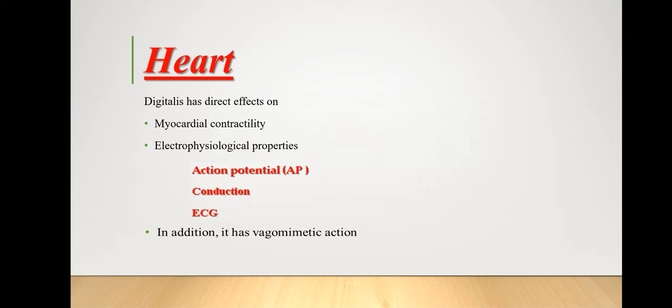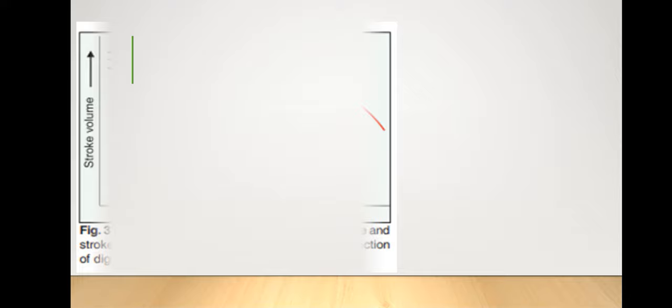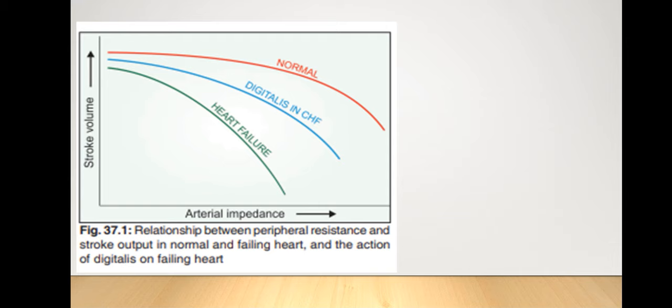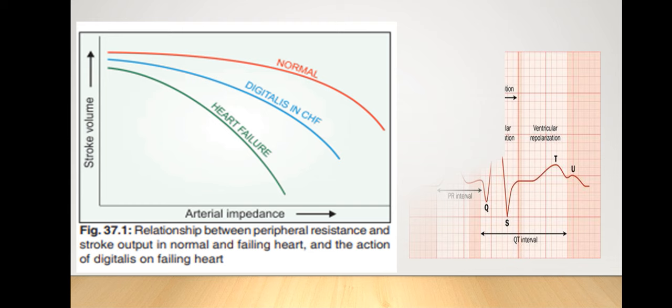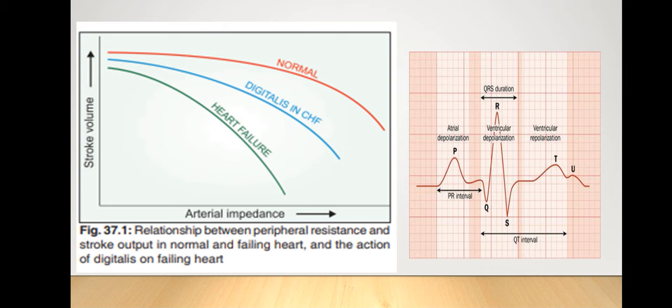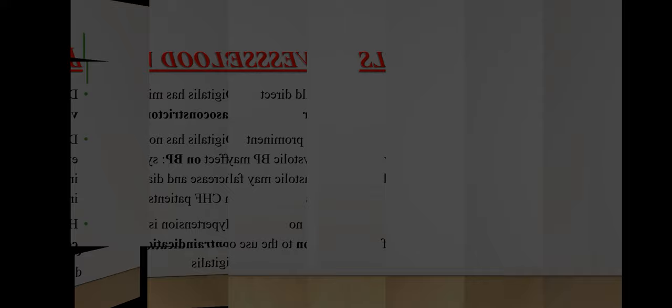Atrial fibrillation is an irregular and often very rapid heart rhythm — an arrhythmia — that can lead to blood clots in the heart. Atrial fibrillation increases the risk of stroke, heart failure, and other heart-related complications. The graphical representation in the first image shows a comparison between normal, digitalized, and failing heart contractility, and the second image shows the ECG changes: decreased T wave amplitude, increased PR interval, shortened QT interval, and depression of the ST segment.